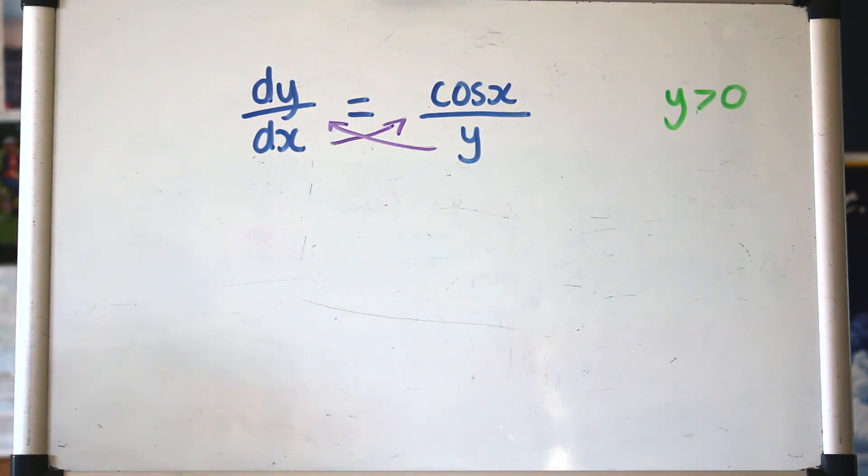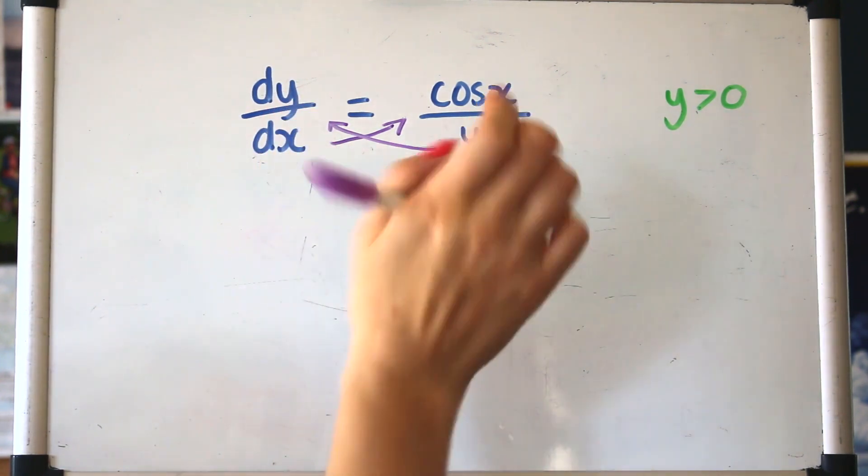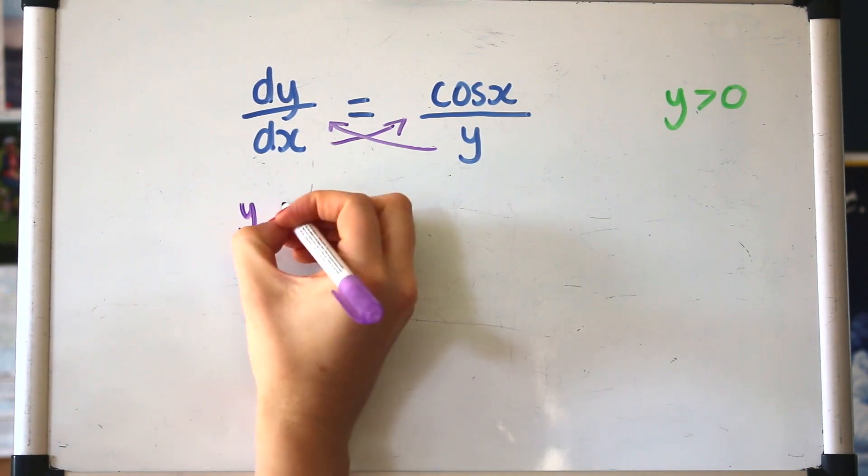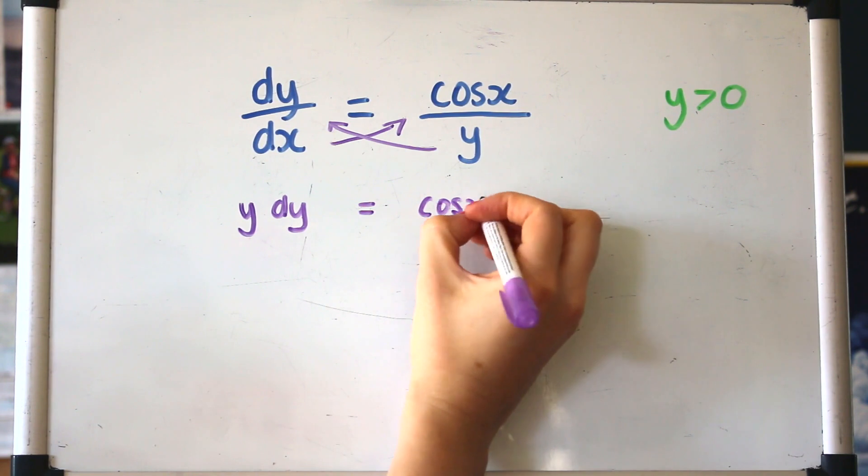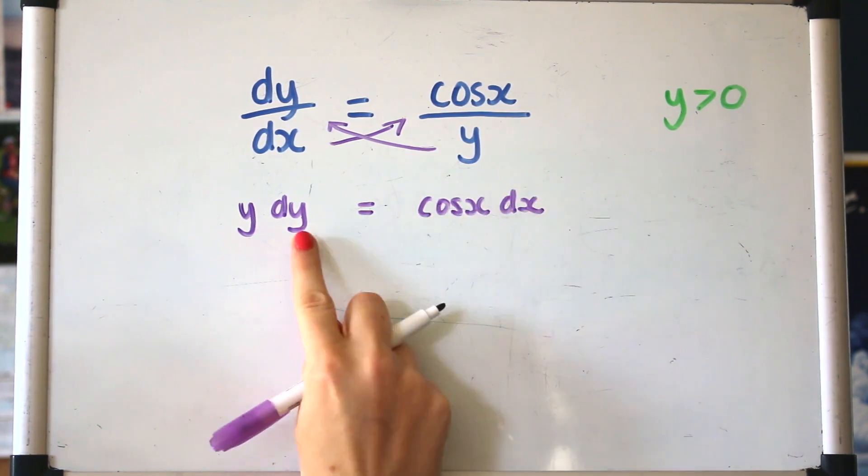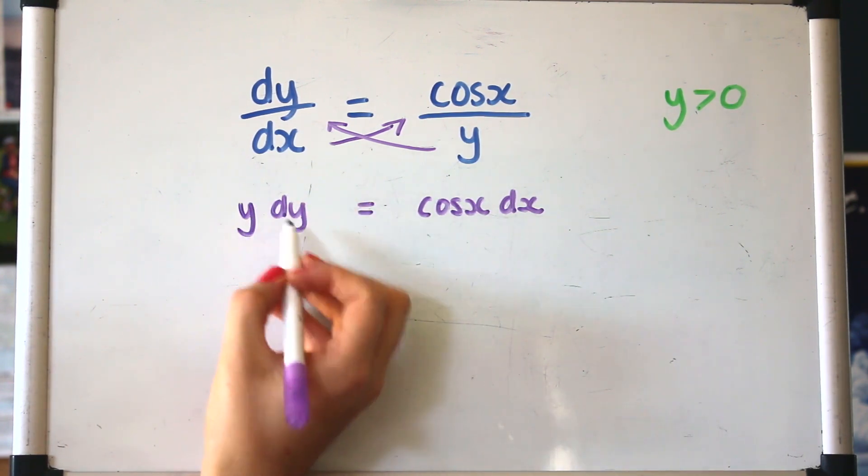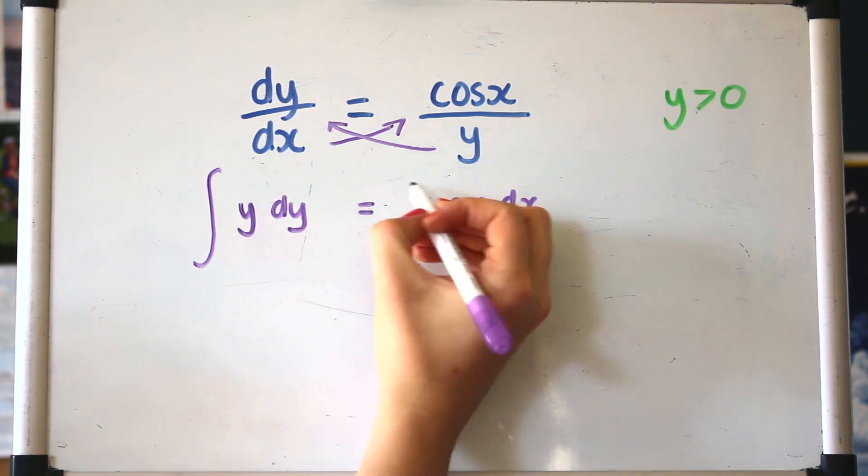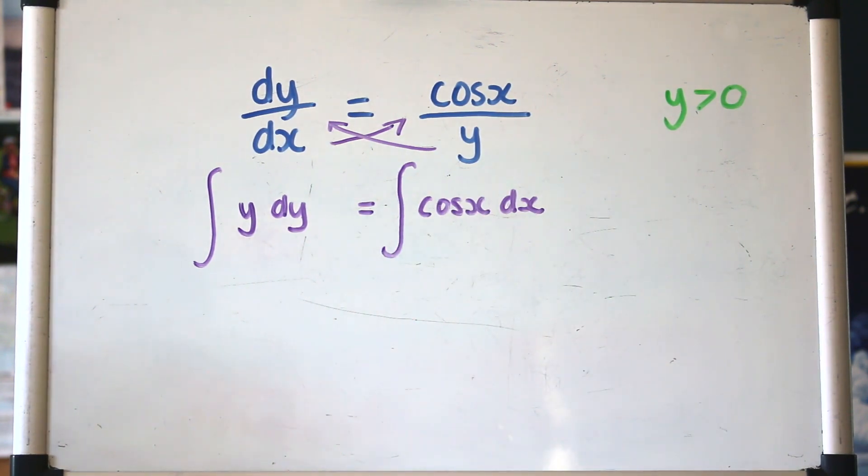You can do it in two separate steps or in one fell swoop if you're happy. Bringing the y up and the dx up, we'll have y times dy equals cos(x) times dx, and I like to write the dx and the dy at the end of each line because then what we can do is just integrate both sides. You can apply an integral sign to both sides like that, and then it's just the case of integrating both sides.